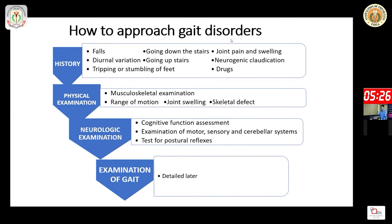Tripping and stumbling can be due to anything. It can be due to a lower motor neuron problem, it can be due to an upper motor neuron problem, and it can be due to dystonia as such.